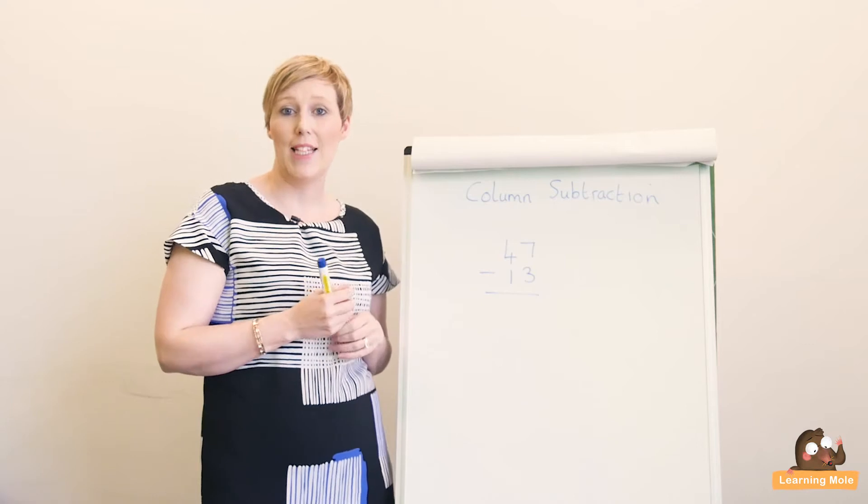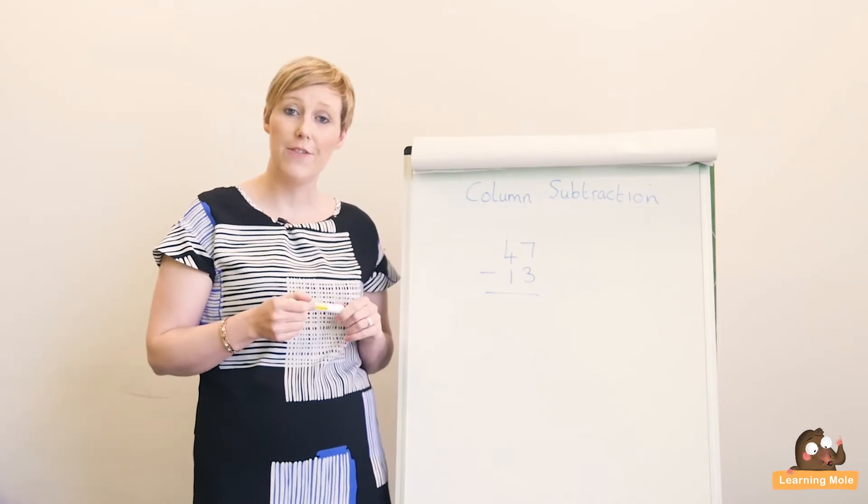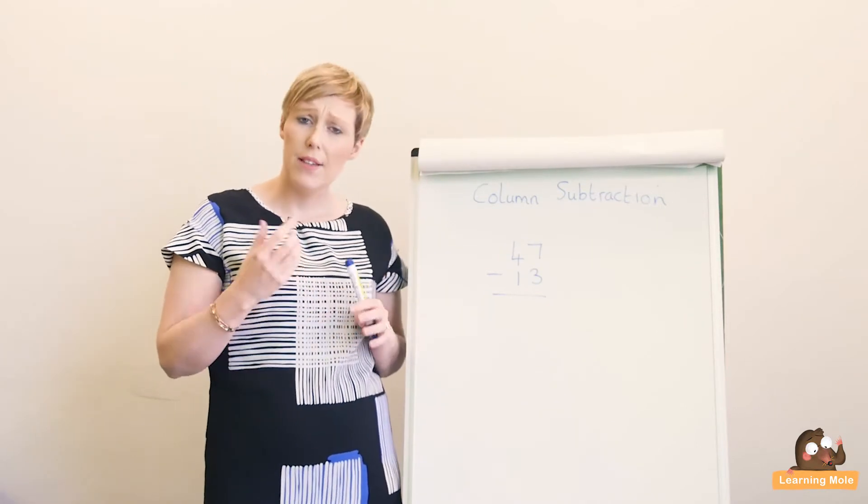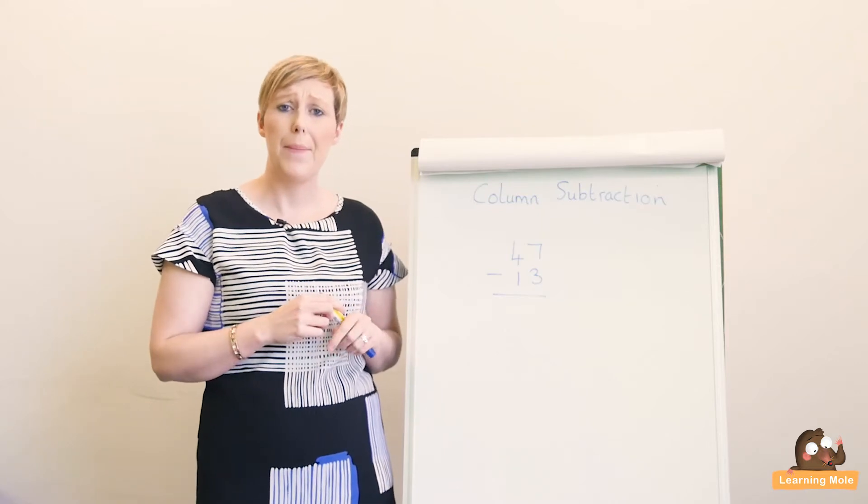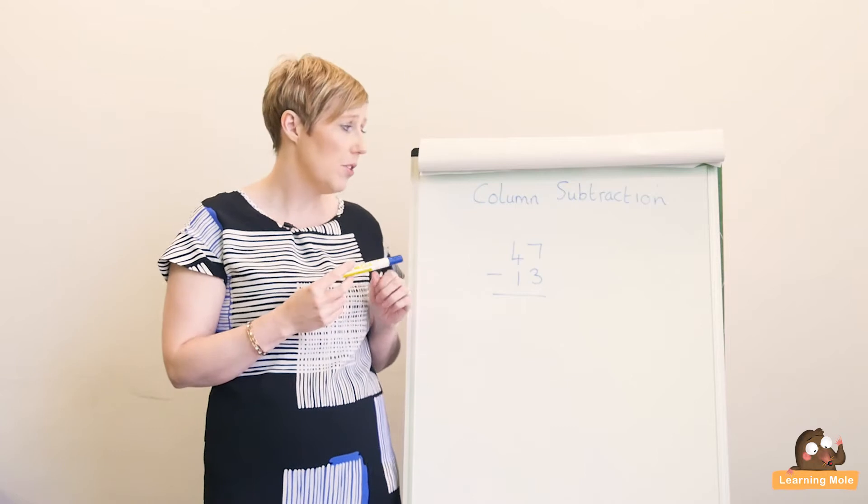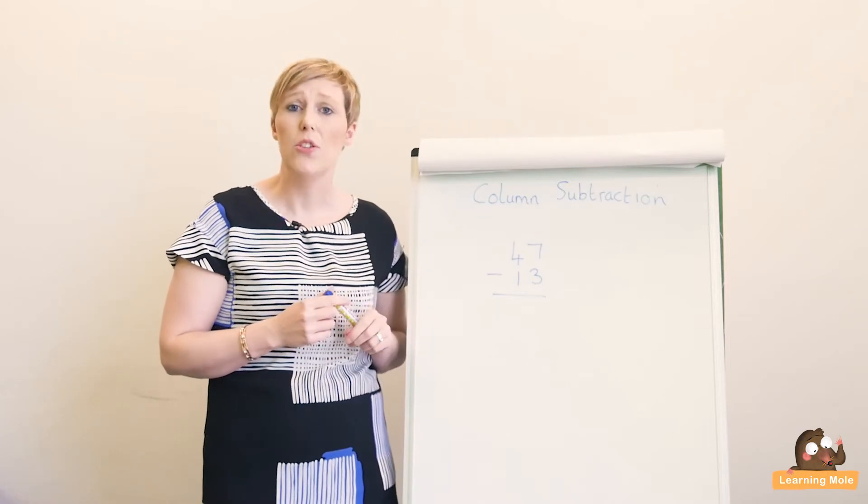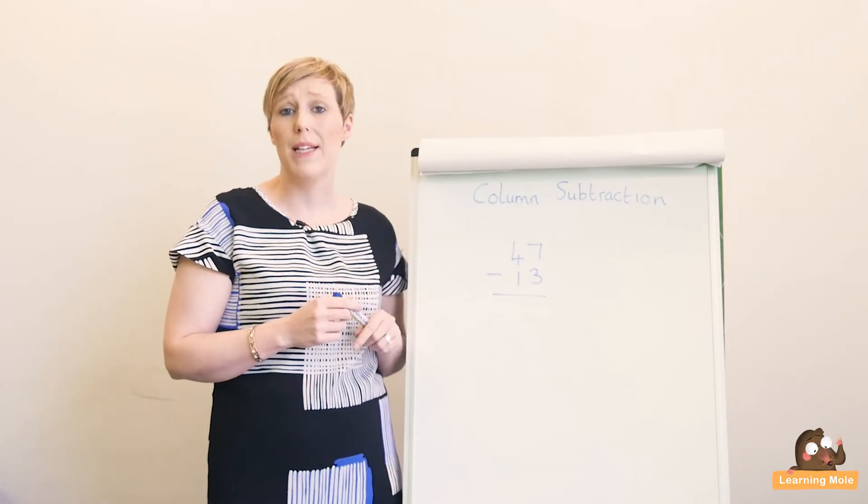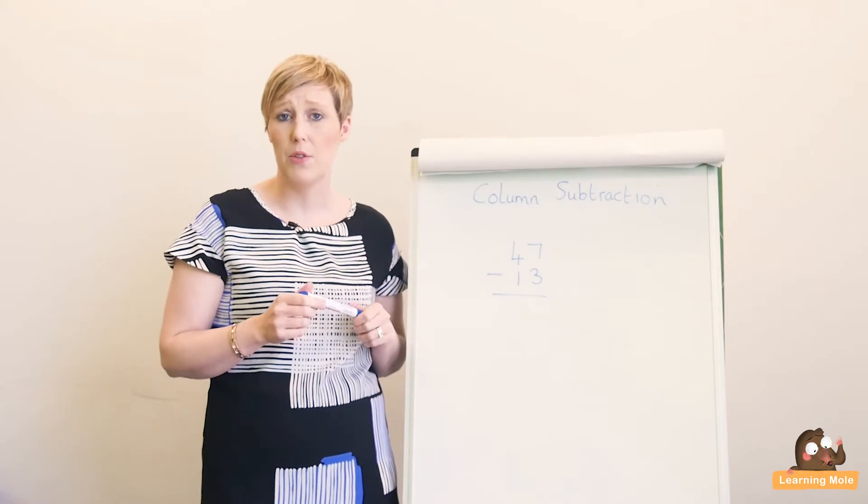Welcome to Learning More. This is lesson number eight in our Subtraction for Kids series. We are in Key Stage 2, for ages seven to eleven year olds, and we are going to look at column subtraction. We're moving into the more formal written methods for subtraction when the numbers are a bit too big for children to work out mentally or on a number line.